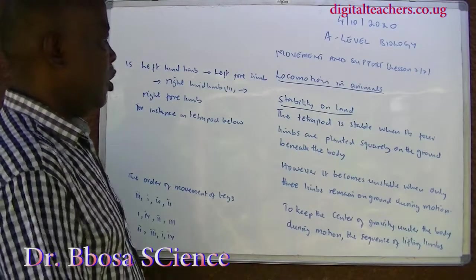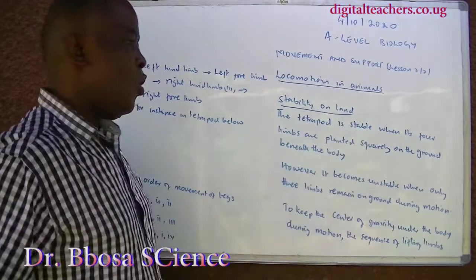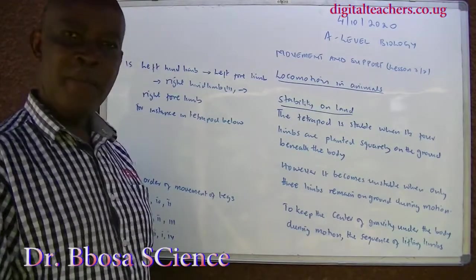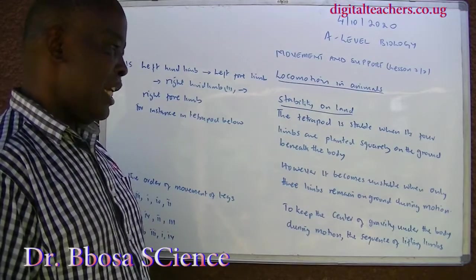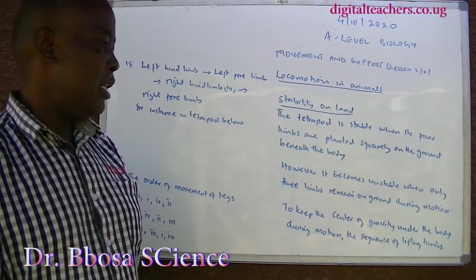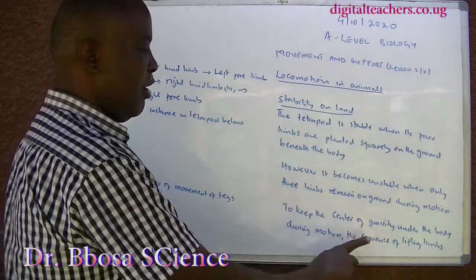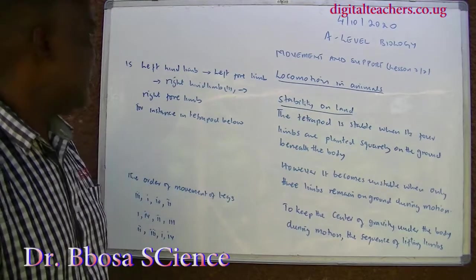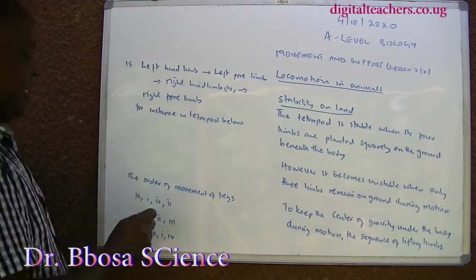Stability on land: a tetrapod is stable when its four limbs are planted squarely on the ground beneath the body. However, it becomes unstable when only three limbs remain on the ground during motion. To keep the center of gravity under the body during motion, the sequence of the limbs is: left hind limb, left fore limb, right hind limb, right fore limb.